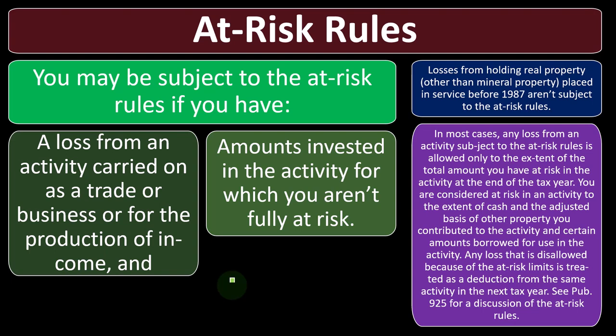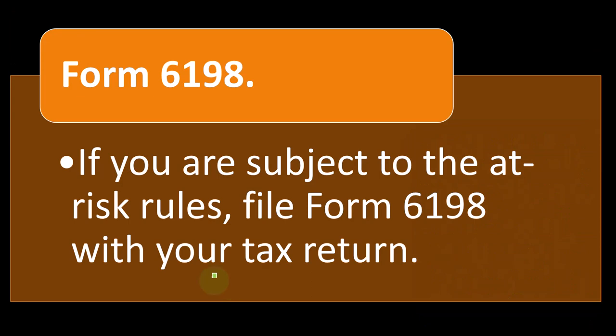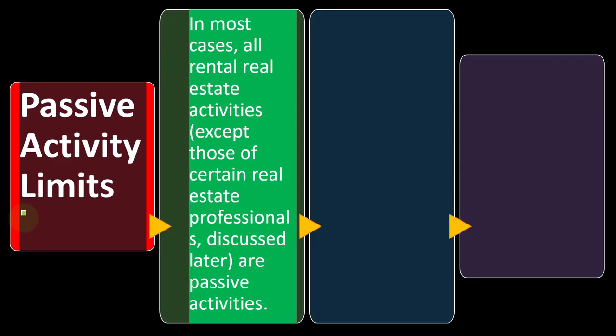Any loss disallowed because of the at-risk limits is treated as a deduction from the same activity in the next tax year. See Publication 925 for a discussion of the at-risk rules. If you are subject to the at-risk rules, file Form 6198 with your tax return. The passive activity limits are possibly the most common type of hurdle we will run into with rental losses.